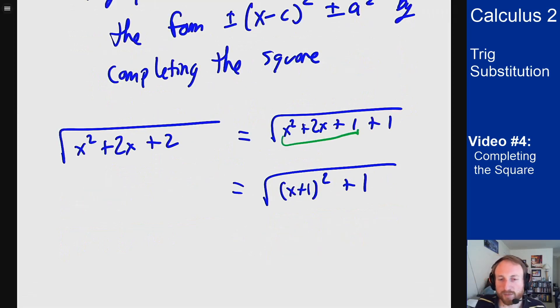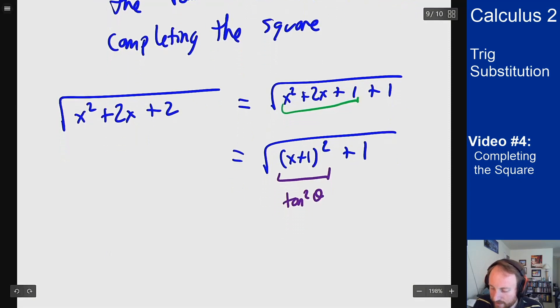And how would I use trig sub to solve that one? Well the point is I want this term to become tangent squared of theta because then tangent squared plus 1 goes to secant squared and things work out nicely. So I would need to make my trig sub be that x plus 1 equals tangent theta. So not just x but x plus 1 here. That will let me make the solution that I need to get to the right expression that will simplify out to get my answer.